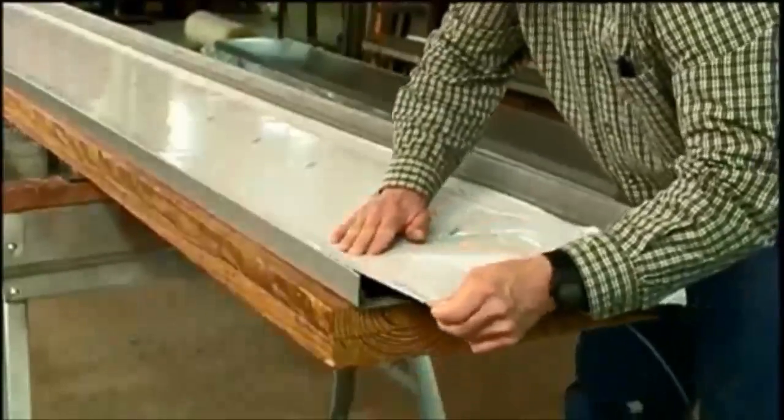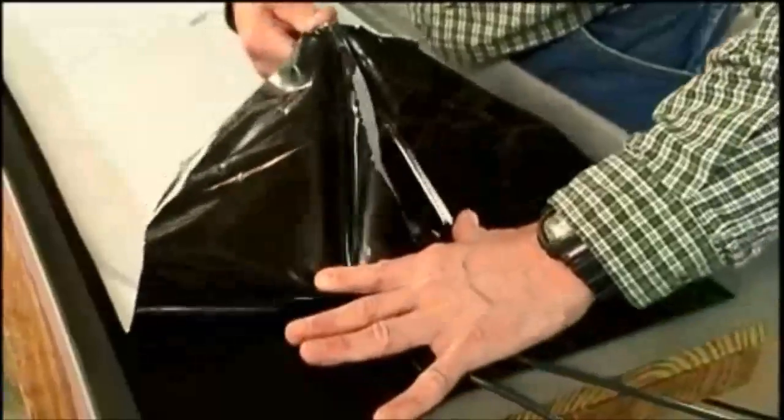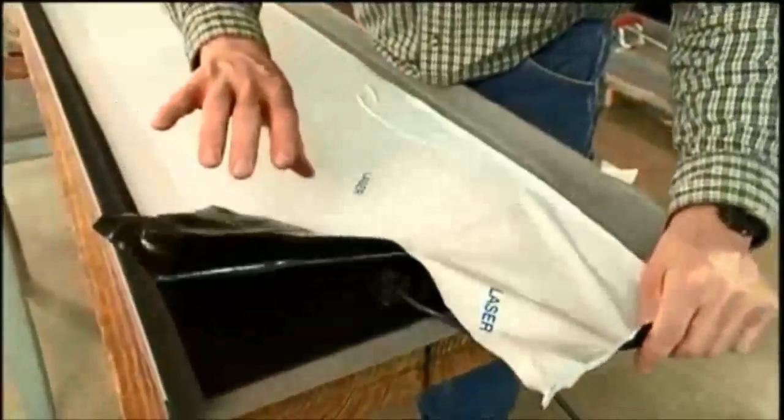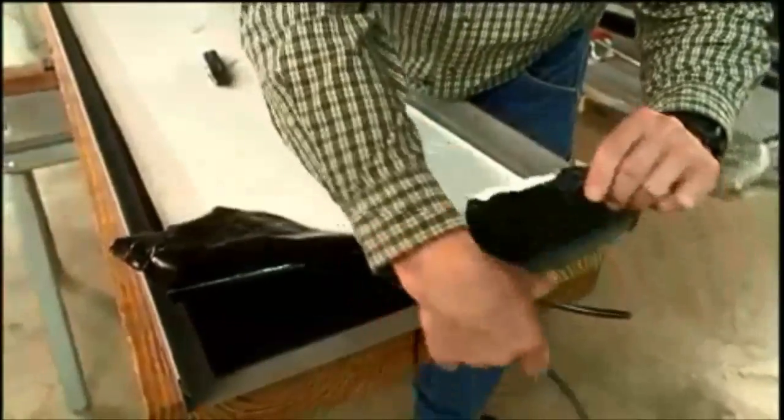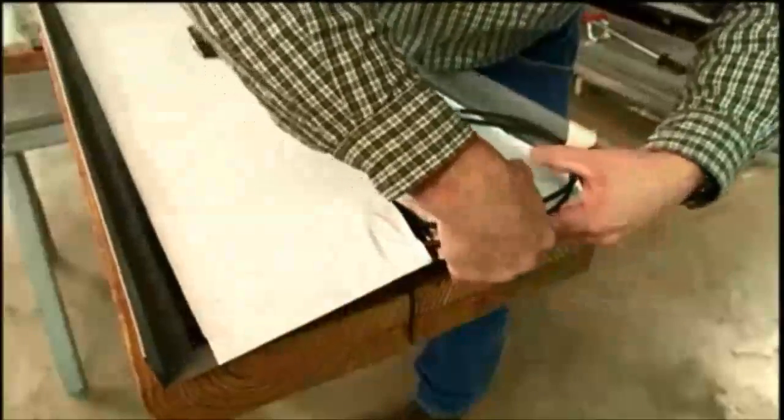At the wire terminal location, simply slit the film at its center to a point just beyond the terminals. The film can now be placed around the wires and the wires can be re-taped into place on top of the film.